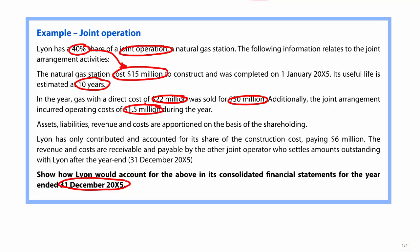It's a 40% shareholding, so we apportion it 40% — here it will be 40 and 60. But there will be a legally binding agreement that says we have to have unanimous consent. The example also tells us that LEON has contributed and accounted for its share of the construction costs, paying the 6 million. They've credited bank with 6 million and debited property, plant and equipment. The revenue and costs are receivable and payable by the other joint operator, who settles amounts outstanding with LEON after the year end.